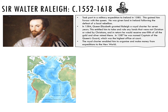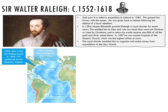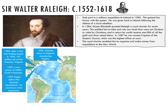Raleigh undertook several expeditions. In 1585, after a first fact-finding expedition in 1584, a hundred and seventy settlers set out for Roanoke, Virginia in North America. In 1586, these colonists returned to England, abandoning Virginia. Then in 1587, a new group of settlers set sail for Roanoke. In 1590, English sailors found Roanoke abandoned, and what happened remains a mystery to this day. No further colonisation took place until the early 17th century.